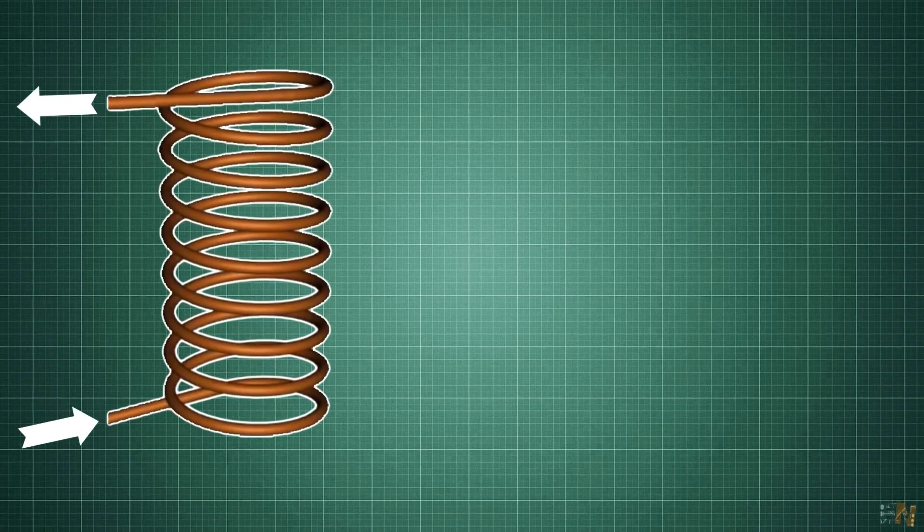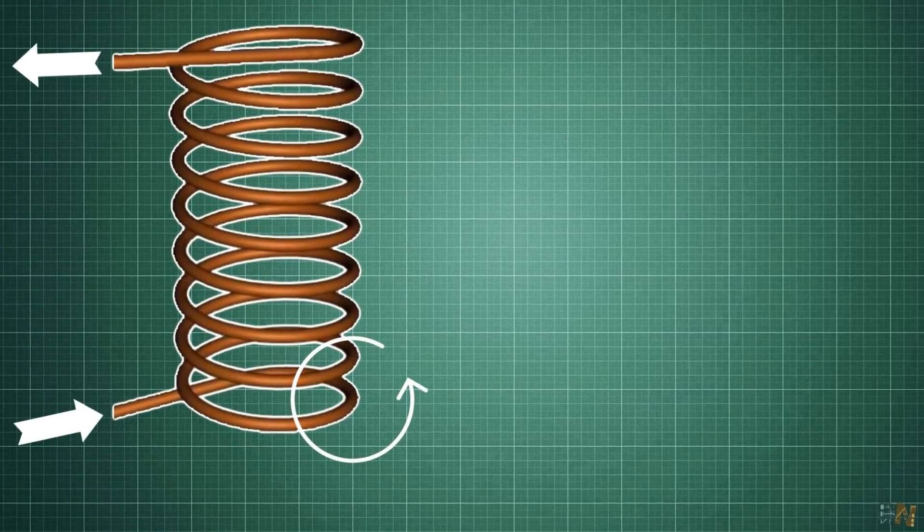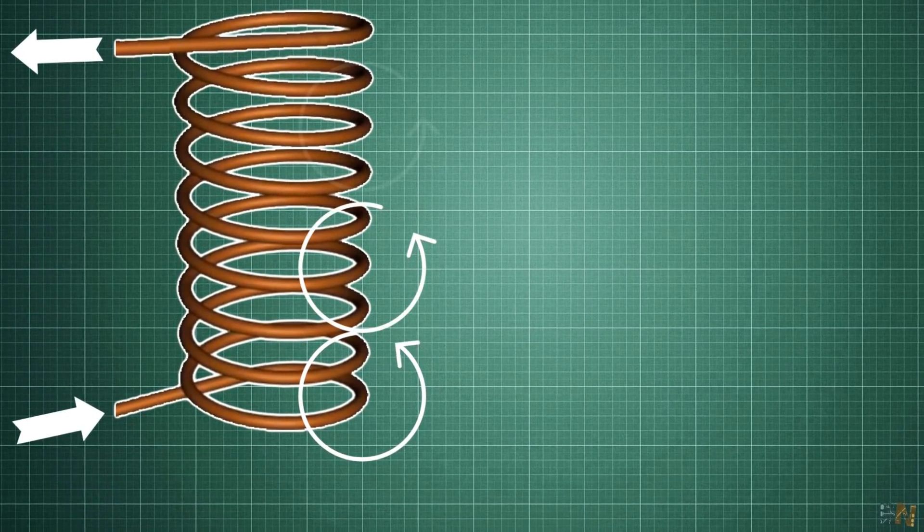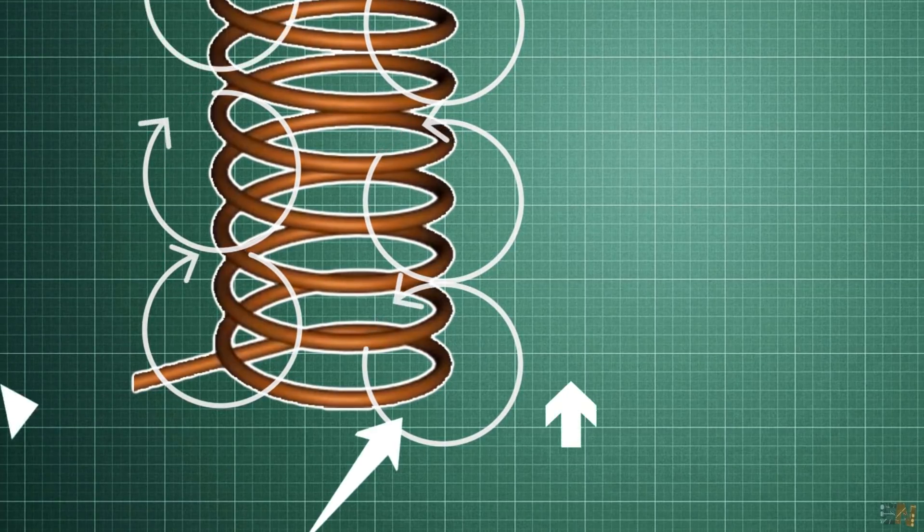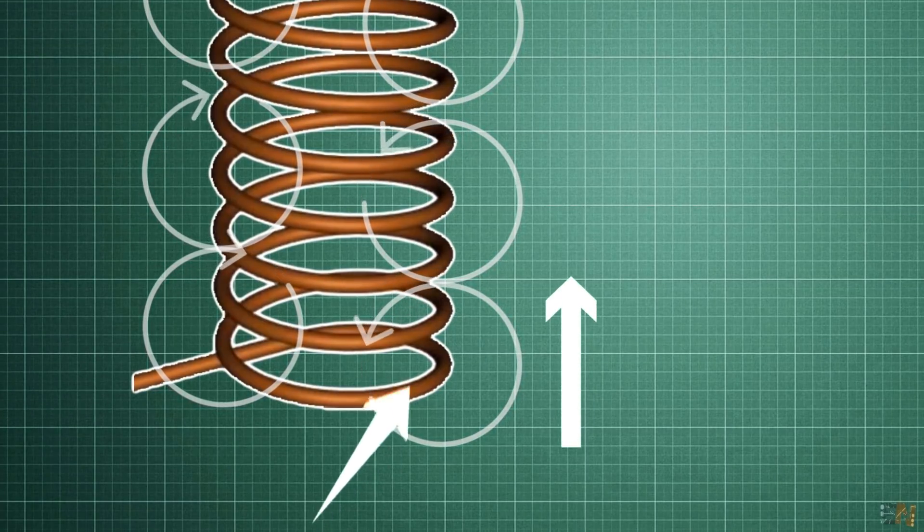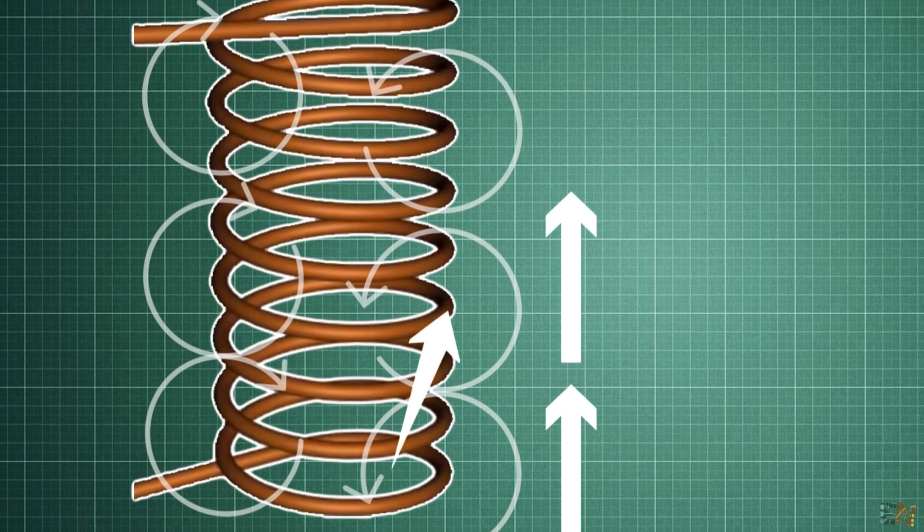These are just multiple wires placed one on top of the other, so the magnetic field can sum up. This wire here, by the rule of the right hand, will create a magnetic field in this direction. This one here, like this. And so on.